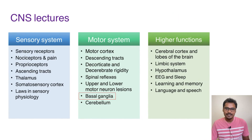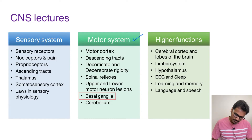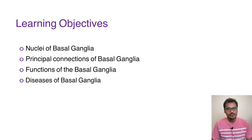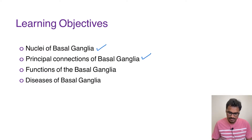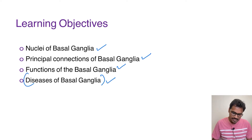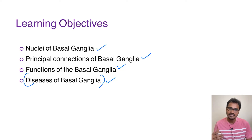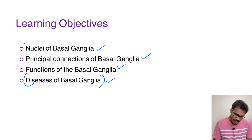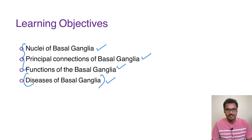We are discussing the basal ganglia within our motor system series. The learning objectives of today's topic will be: nuclei of basal ganglia, principal connections of basal ganglia, and functions as well as diseases of basal ganglia. Diseases of basal ganglia — including Parkinson's disease, which is the most important — will be covered in a separate video. In this video we will cover the nuclei, principal connections, and functions.